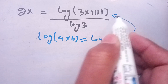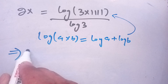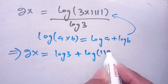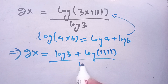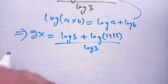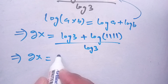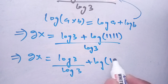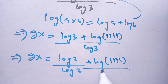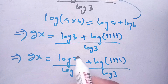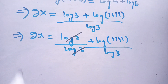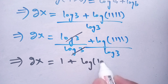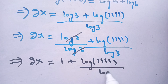Using this identity in the numerator, we get 2x is equal to log of 3 plus log of 1111, all divided by log of 3. This splits into log of 3 divided by log of 3 plus log of 1111 divided by log of 3. Cancelling log of 3 over log of 3 gives 2x is equal to 1 plus log of 1111 divided by log of 3.